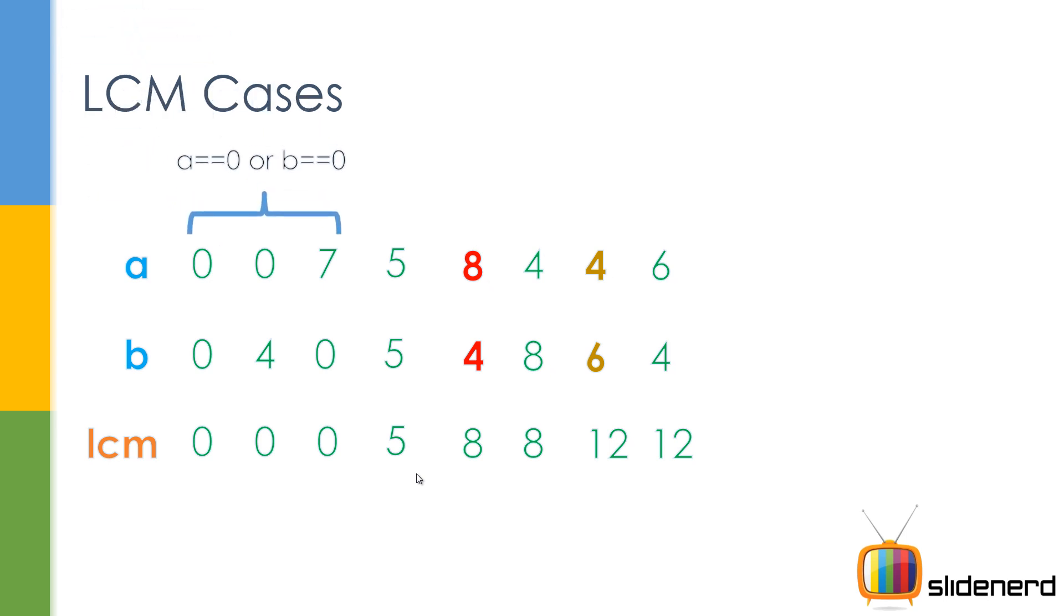So as you guys can see, I told you about the different cases. A is 0 or B is 0, that's one of the conditions. Here if you see, A is greater than B and A is a multiple of B. In that case, the LCM is the number A itself. In the second case, A is less than B. B is a multiple of A.